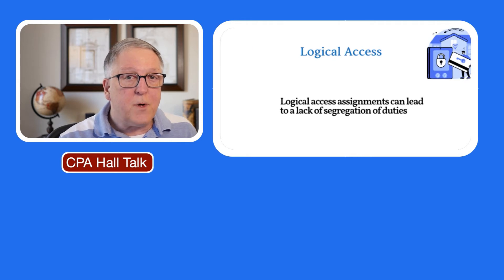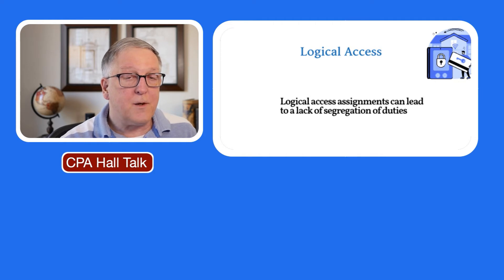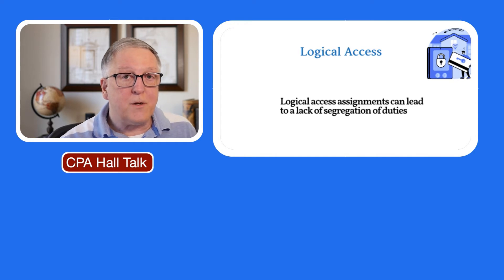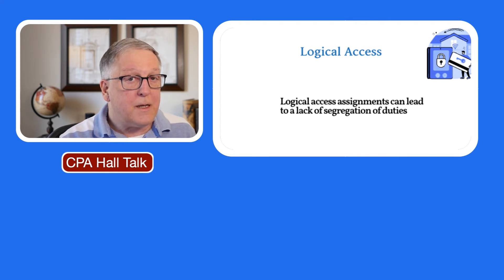One of the things we need to be aware of in relation to IT is logical access. Logical access is the part of the program that allows a person access into certain components. For instance, if the IT administrator said Charles Hall could only get into the accounts payable module, then he's assigned me the rights to that part of the software, and I couldn't get into, say, accounts receivable.